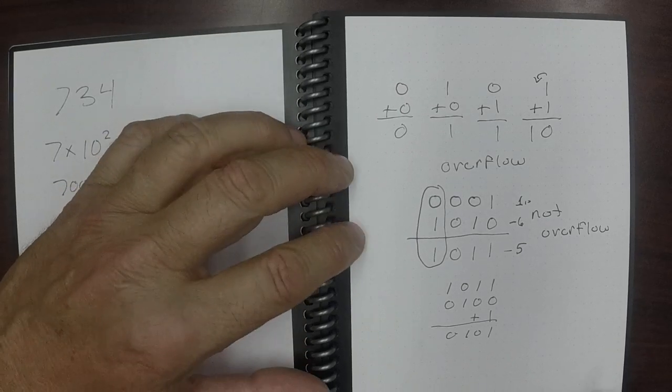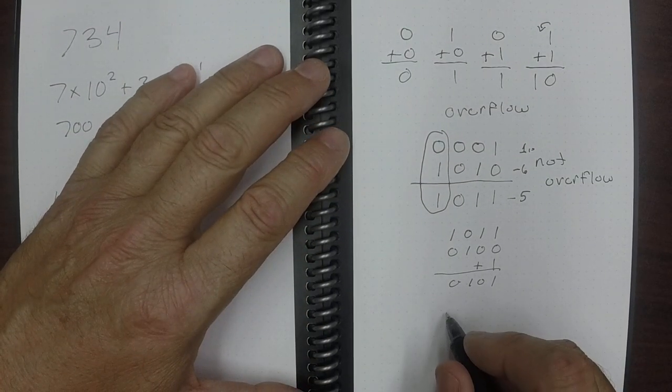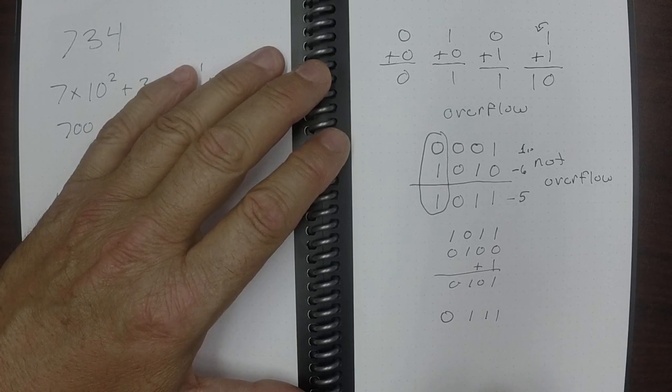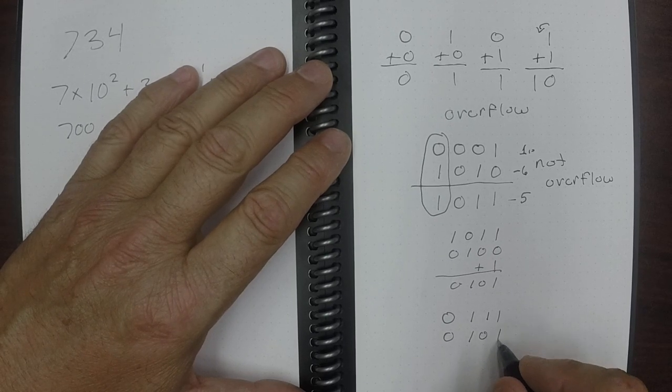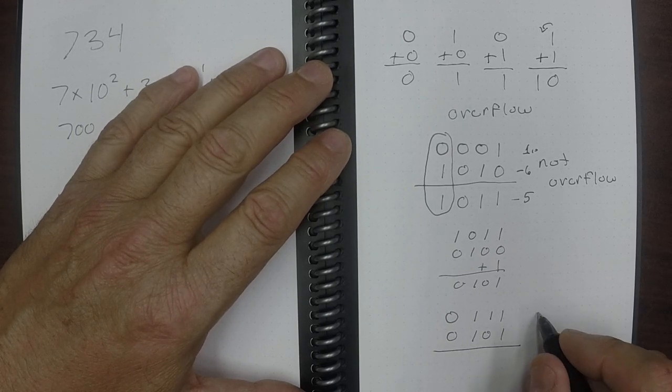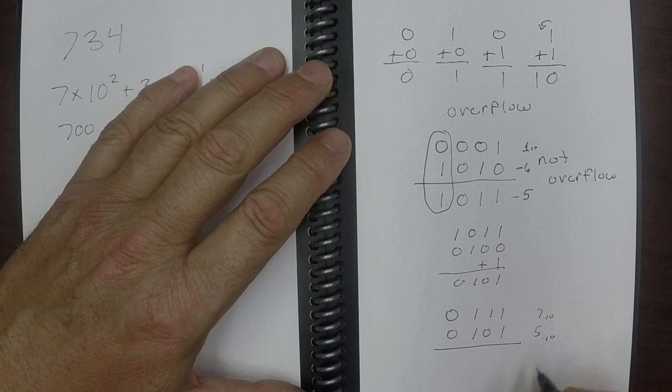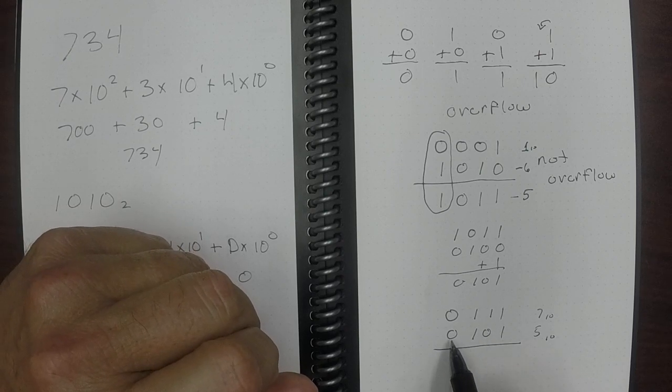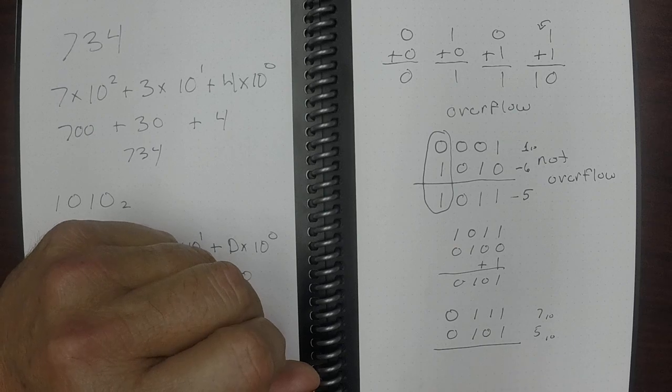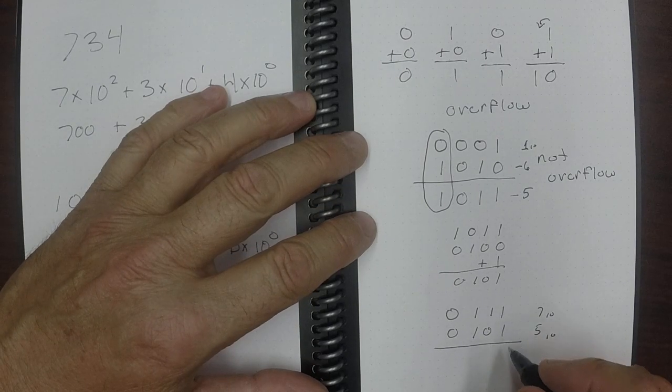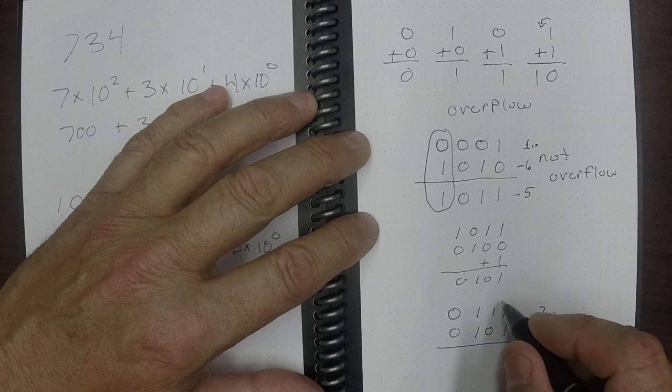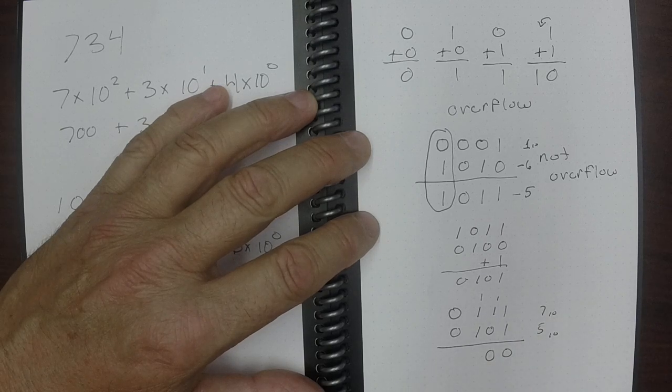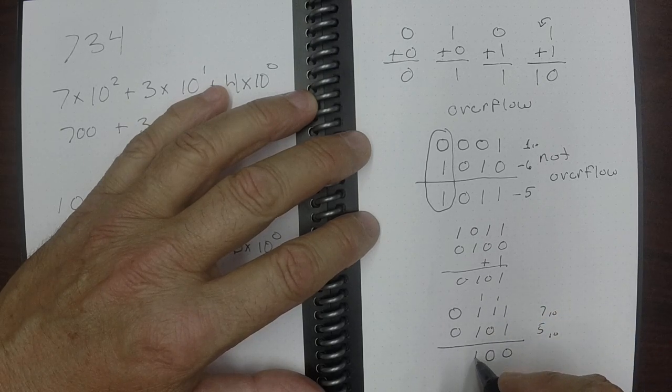Now let's look at one that is overflow. And again, the leftmost bit is the sign bit. So we're going to do 0, 1, 1, 1 and we're going to do 0, 1, 0, 1. This is basically adding 7 and 5 together in base 10. It should come up with 12. Well, we've only got 3 bits to show the number, and remember the leftmost bit is the sign bit. These are positive numbers. When we add this together, 1 plus 1 is 0, carry the 1. 1 plus 1 is 0, carry the 1. 1 plus 1 is 0 plus 1 is 1, and carry the 1.